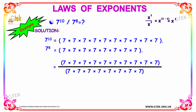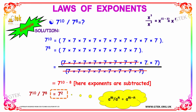Let's solve the next example. We have base 7 with exponent 10 divided by base 7 with exponent 8. On cancelling, we get 7 into 7. Instead of that, we can simply use the exponential law: base a exponent m divided by base a exponent n equals base a to the power m minus n. Applying the logic, we get base 7 to the power 10 minus 8, which equals 7 to the power 2, so the exponents are subtracted.